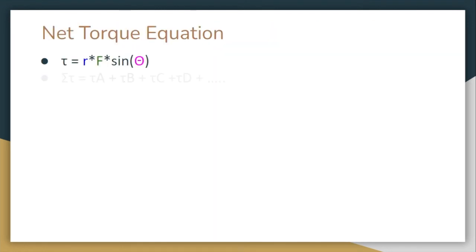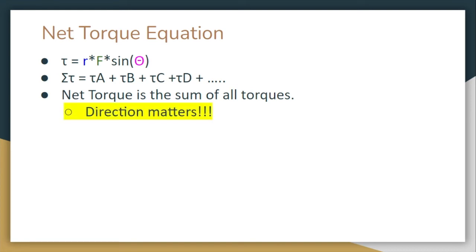So here's our regular equation, but now we're going to look at this net torque equation. And we can basically say that net torque is just the sum of all torques. So I have torque A plus torque B plus torque C, so on and so forth. It just depends on how many torques are in the problem. We mentioned before torque is a vector, which means that direction is going to matter.